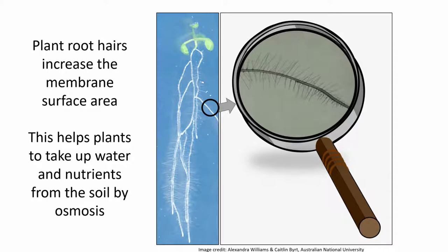Most plant roots have root hairs to increase the surface area of root cell membrane and maximize water and nutrient uptake. Root cells have transport proteins in their membranes that help them to take up water and nutrients from soil.